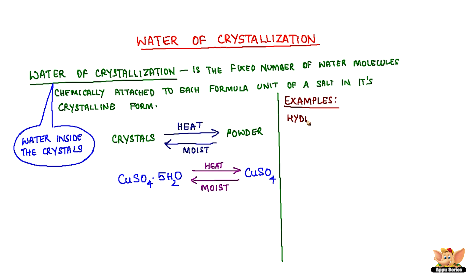The chemical formula for hydrated copper sulphate is CuSO4·5H2O. Here, 5 water molecules are present in one formula unit of copper sulphate.